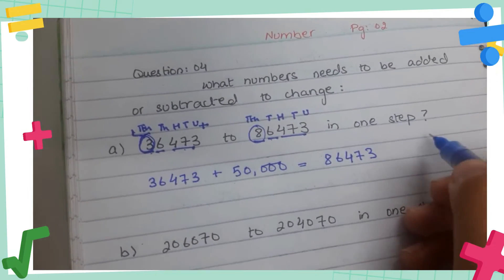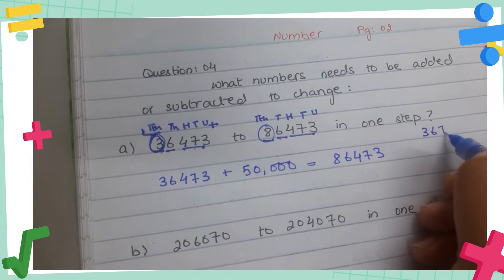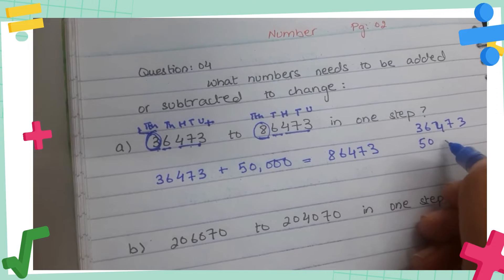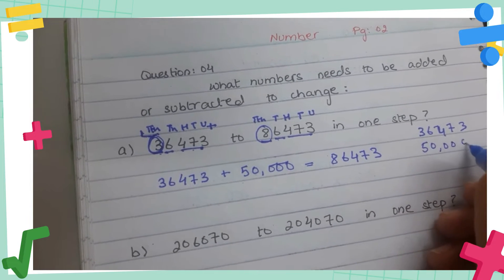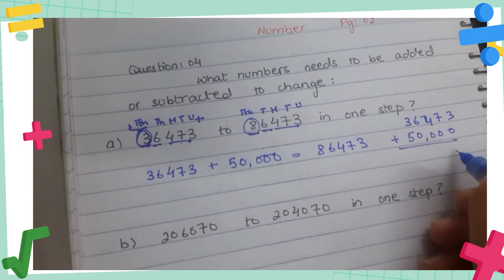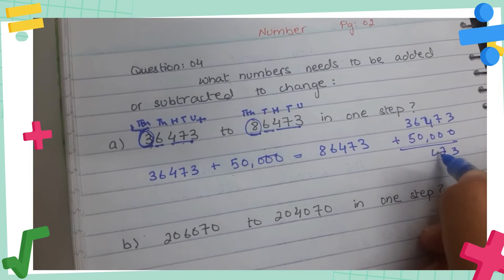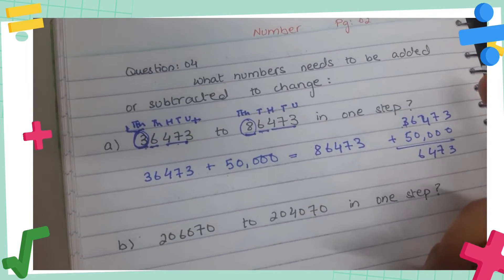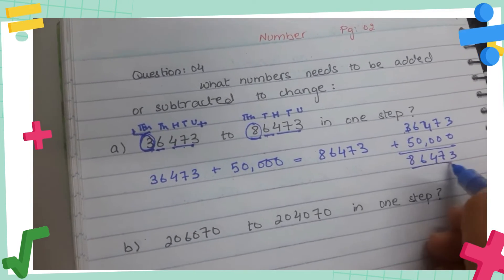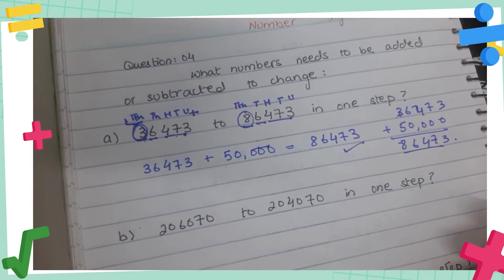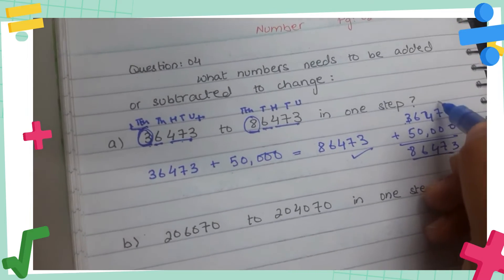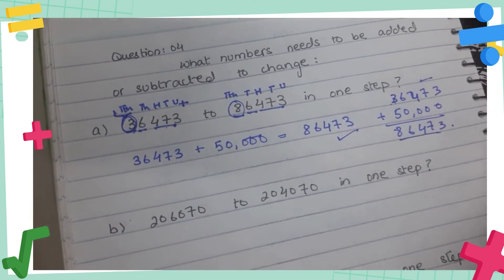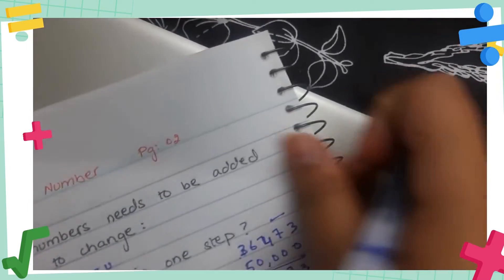We can confirm this manually: 36473 plus 50,000 — write 50,000 below. Adding: 3, 7, 4, 6, then 3 plus 5 equals 8. It becomes 86473, so our answer is correct. You can also confirm this using your calculator.